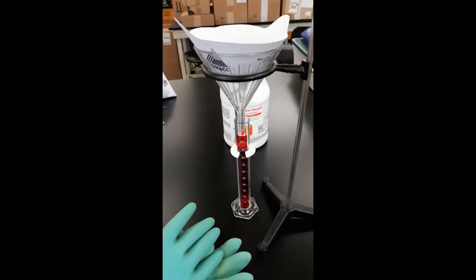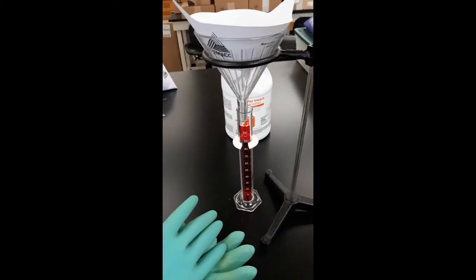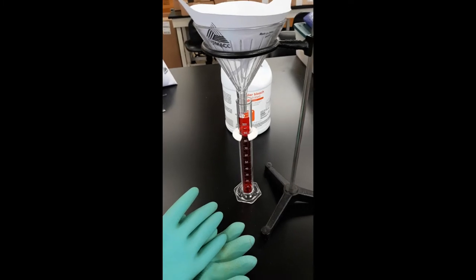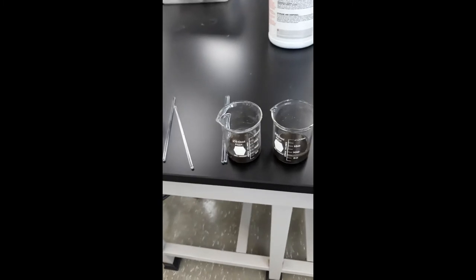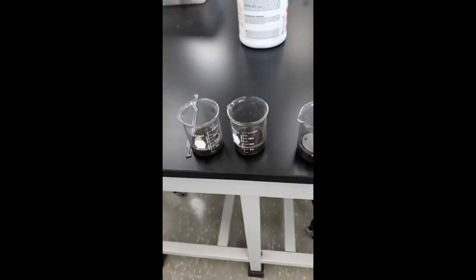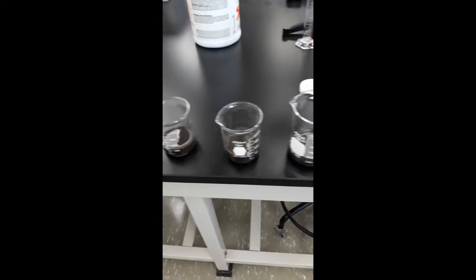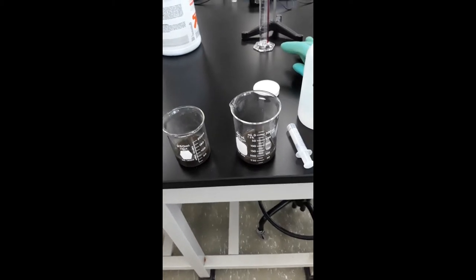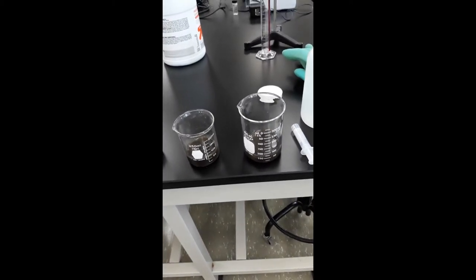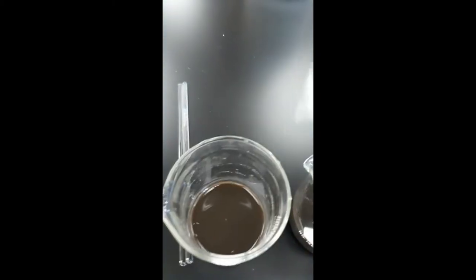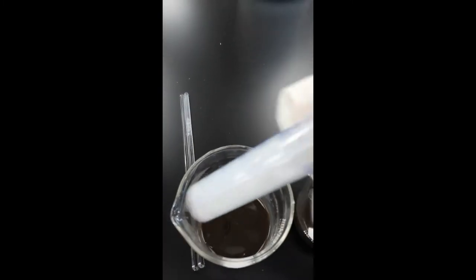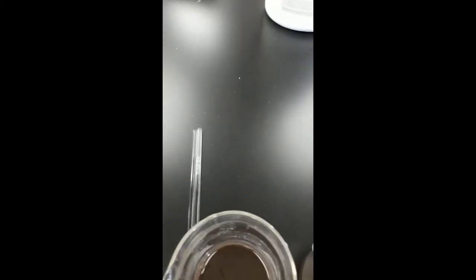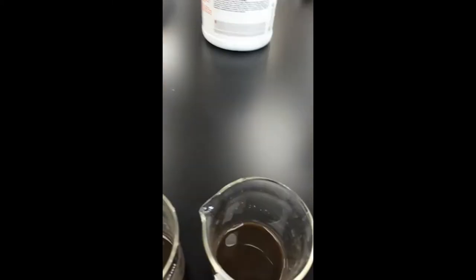We're going to add one mil to the first, five mils to the second, 10 mils to the third, and 15 mils to the fourth. So we're adding one mil here of the polymer and then we're going to stir that up.